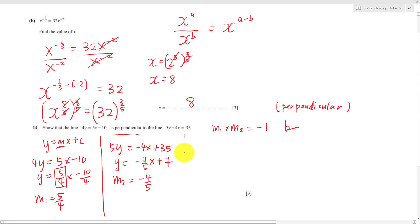If they are perpendicular, I will do m1 multiply m2, which is 5 over 4 multiply negative 4 over 5. After I simplify, I get negative 1. Shown.